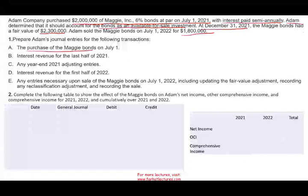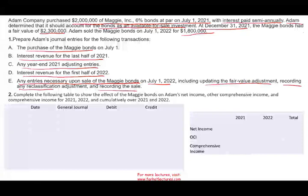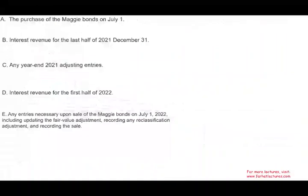We need to prepare journal entries for: the purchase of Maggie's bond, the interest revenue at the end of the year, any year-end adjustment, interest revenue for the first half of the year, any adjusting entries upon the sale of Maggie's bond on July 1st — including updating fair value adjustments, recording any reclassification adjustment, and recording the sale. We'll also complete a table showing net income, OCI, and comprehensive income for 2021, 2022, and in total. This could be a typical CPA simulation or multiple choice question.